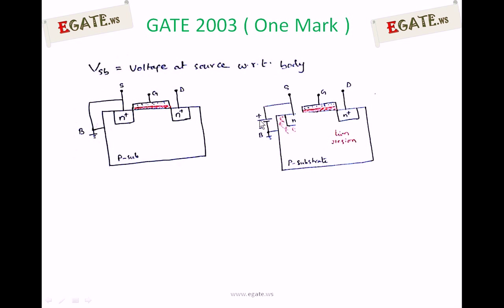Whenever source is at more positive voltage than bulk, that is, source is connected to N-plus, N-plus is now connected with more positive voltage than P-type substrate. This P-N-plus junction, previously it was a simple P-N junction where P-type and N-type were shorted together. But now, N-side is connected with more positive voltage, P-side is connected with negative voltage. Now this P-N junction is under reverse bias.